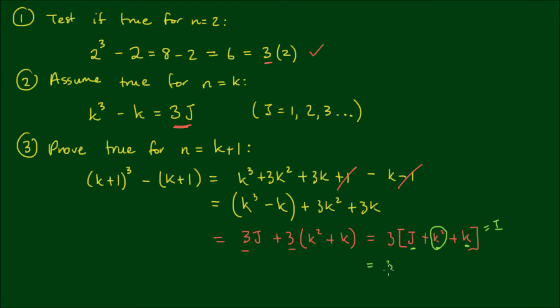So we have 3 times an integer, and of course any multiple of 3 is obviously divisible by 3, so we have proven that it is true for any value of n.